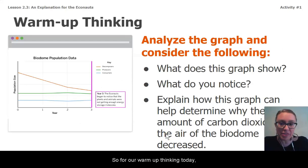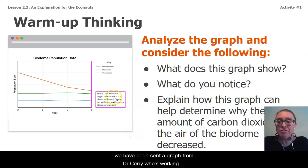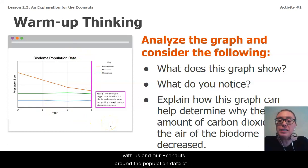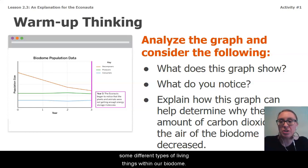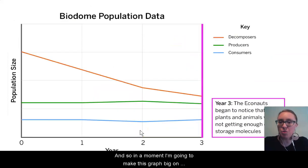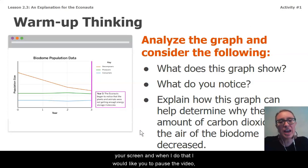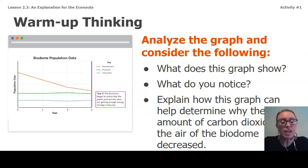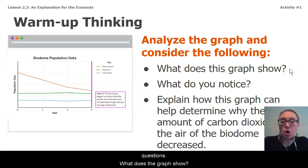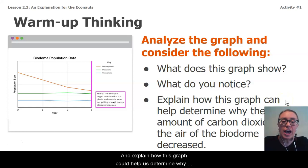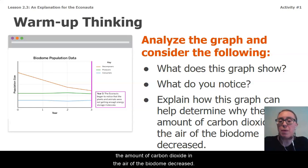So for our warm-up thinking today we have been sent a graph from Dr. Corey, who's working with us and our Econauts, around the population data of some different types of living things within our biodome. In a moment I'm going to make this graph big on your screen, and when I do that I would like you to pause the video, analyze the graph, and consider these three questions: What does the graph show? What do you notice? And explain how this graph could help us determine why the amount of carbon dioxide in the air of the biodome decreased.